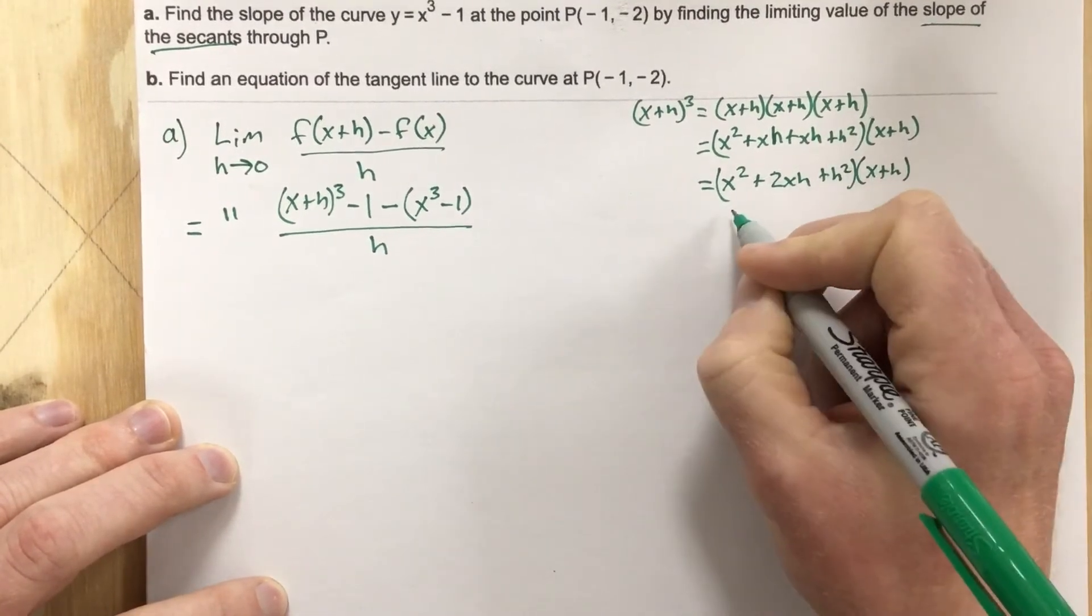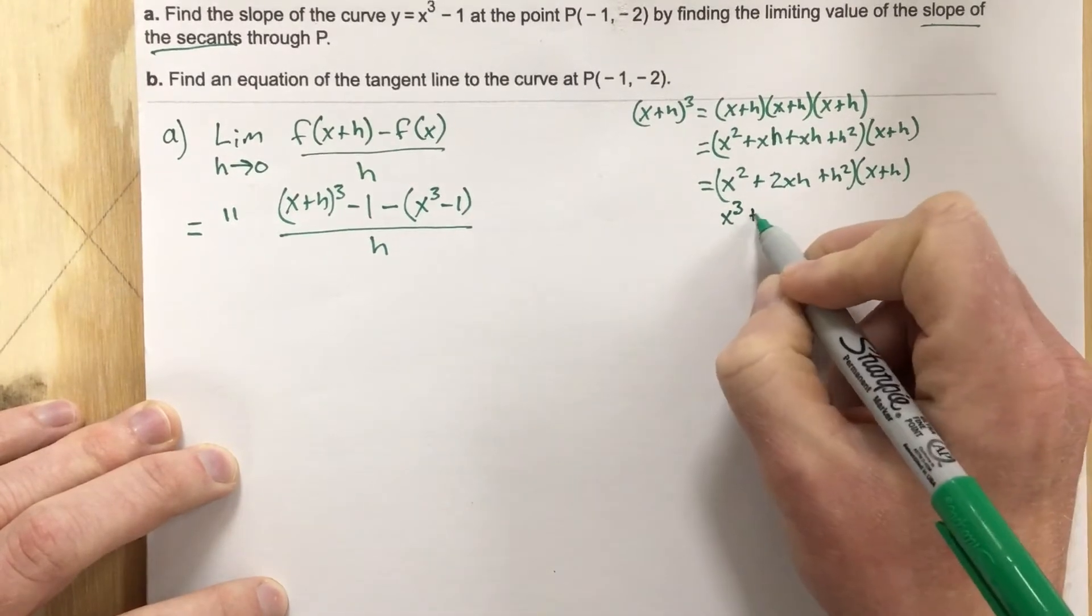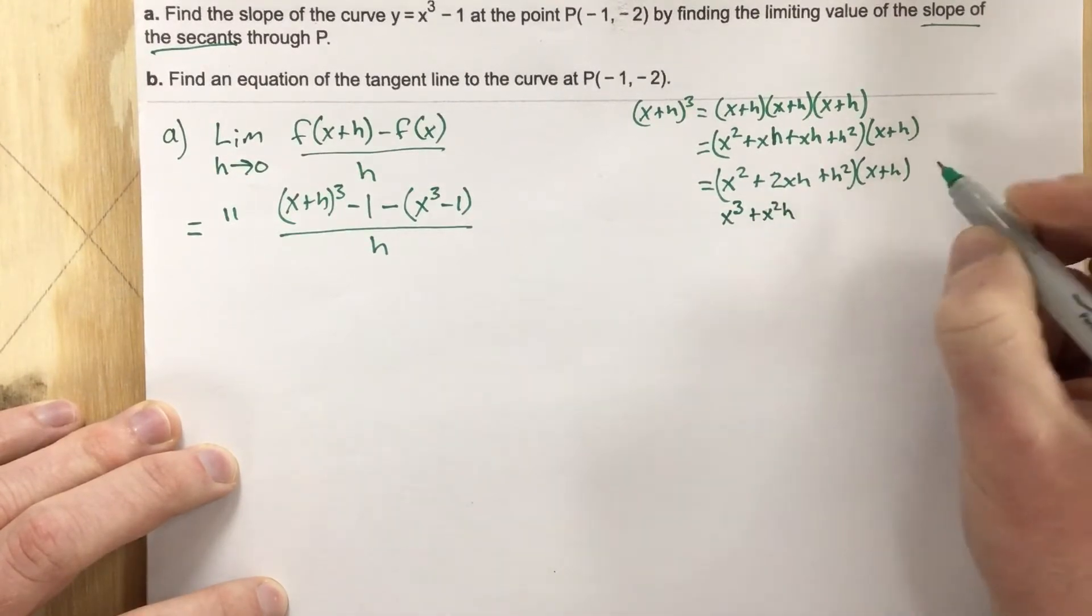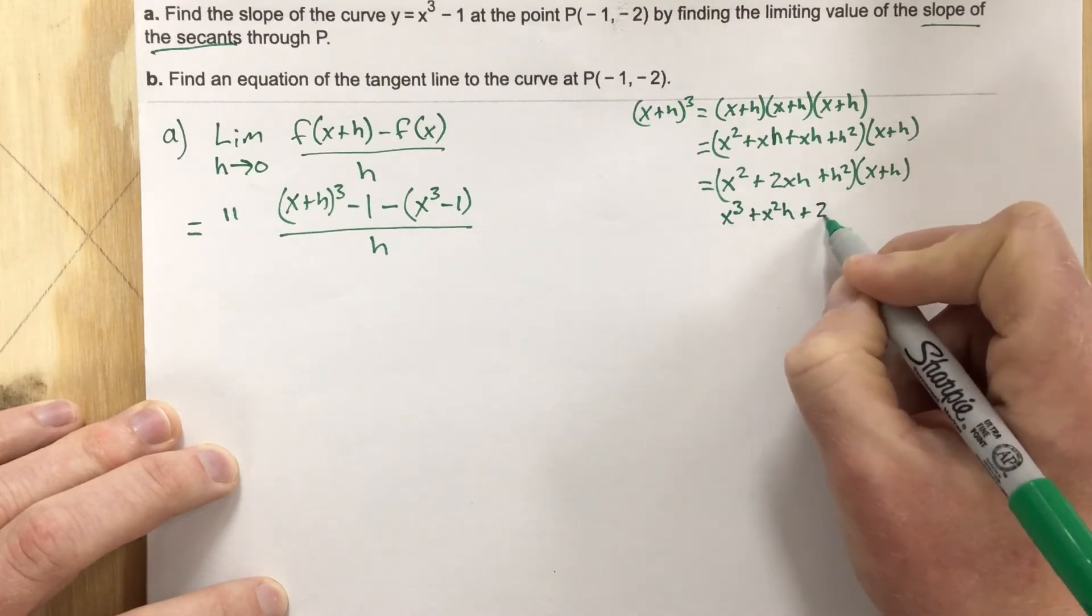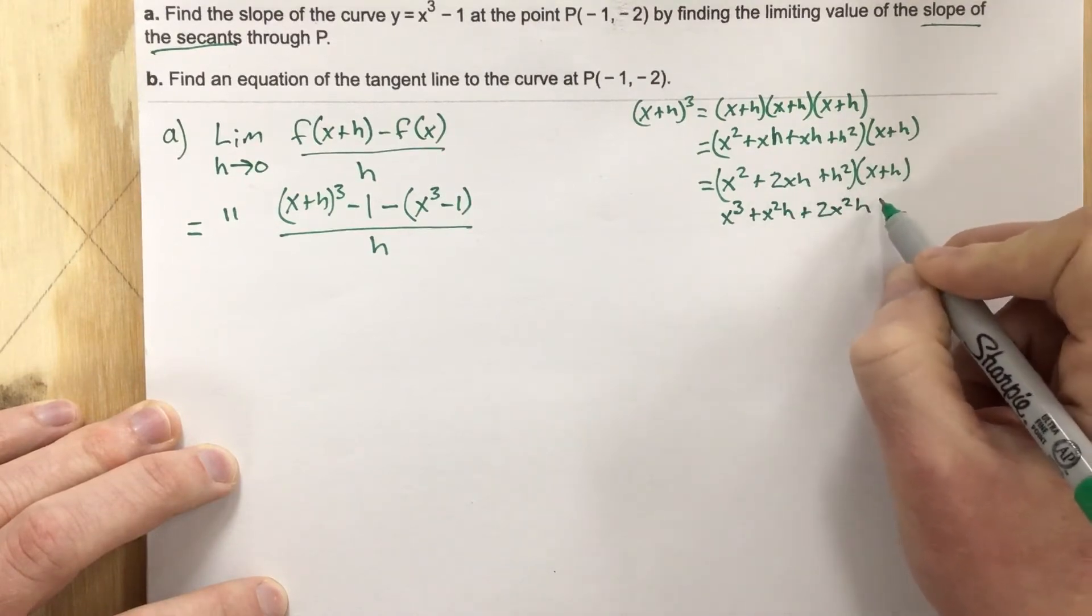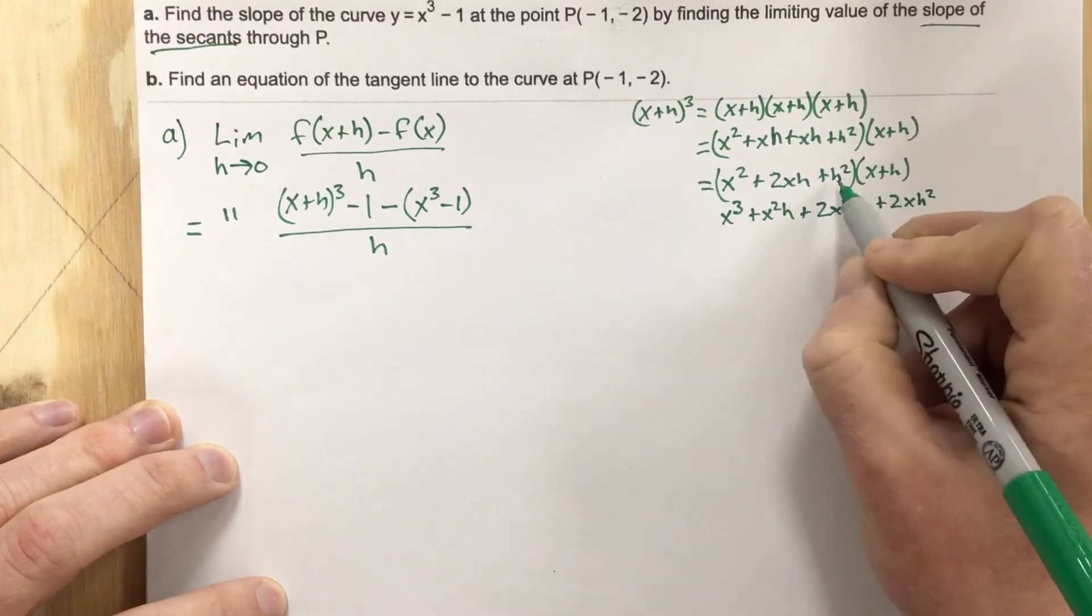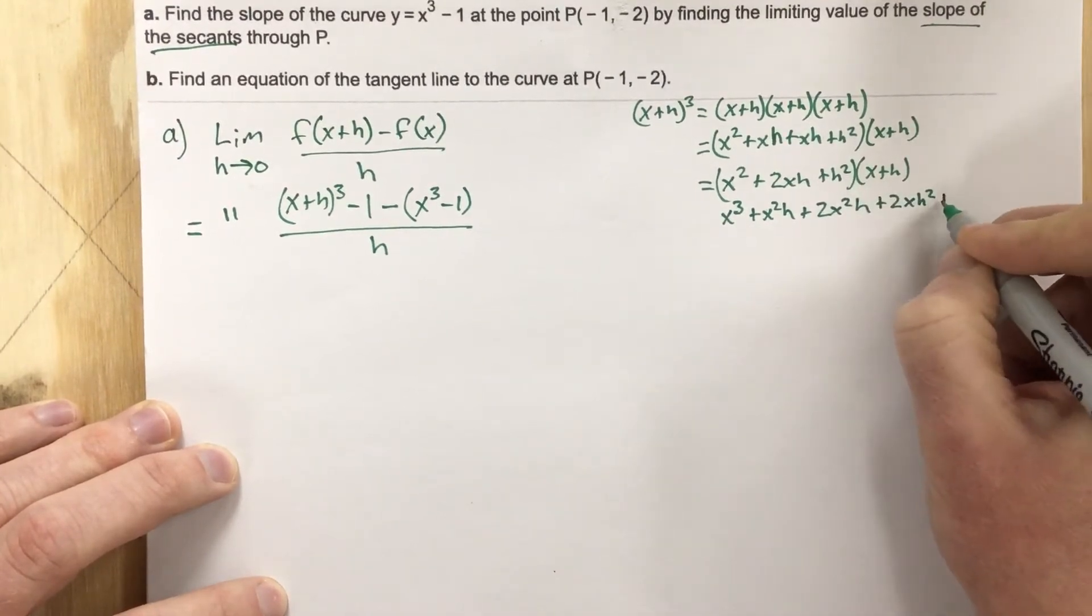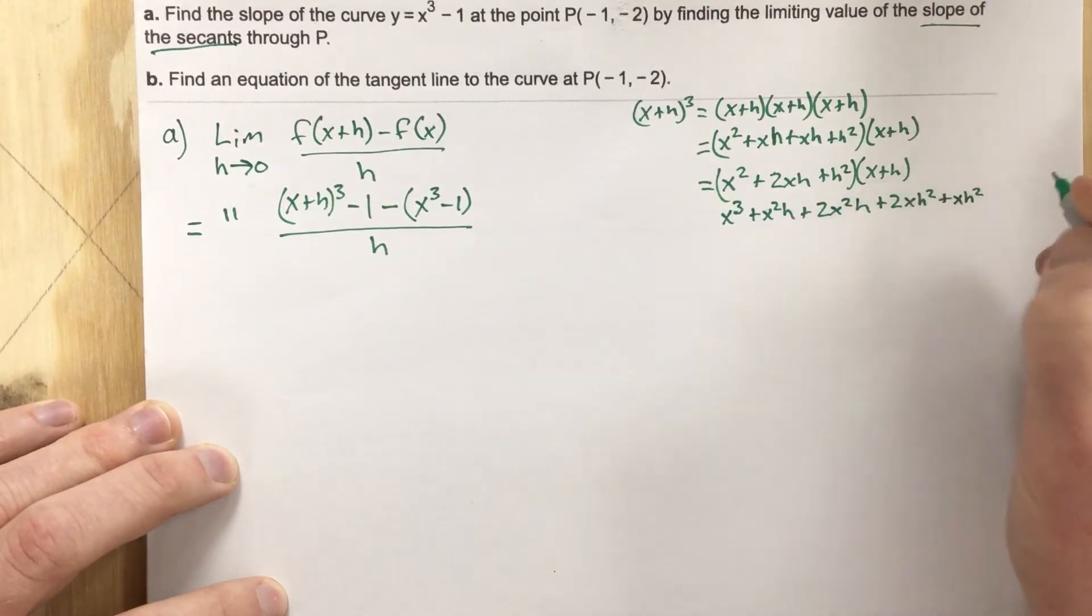x squared times x is going to be x cubed. x squared times h is going to be x squared h plus 2xh times x is 2x squared h. 2xh times h is plus 2xh squared. h squared times x is plus xh squared. And then finally, h squared times h is plus h cubed.